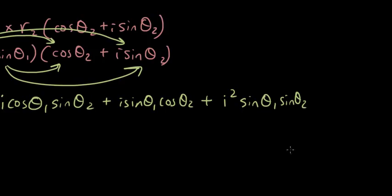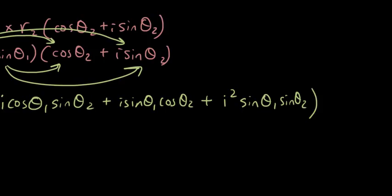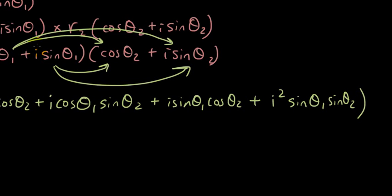All of this is in a big bracket. Why is i squared? Because I have an i here and I also have an i here.